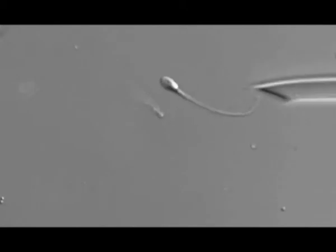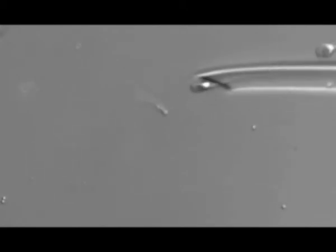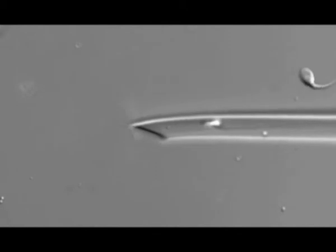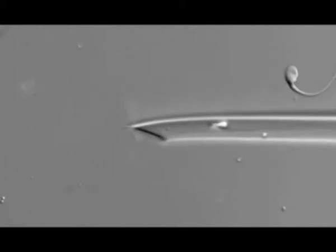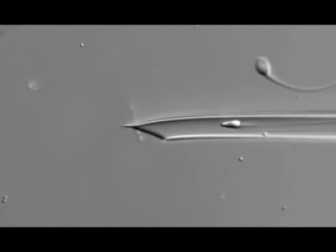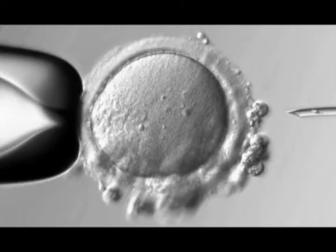Immobilize the sperm and aspirate it into the ICSI pipette. After the sperm has been aspirated, it's immediately injected into the cytoplasm of the oocyte.